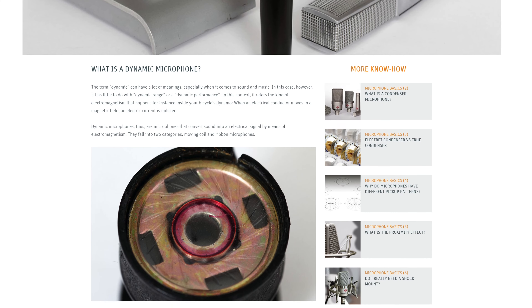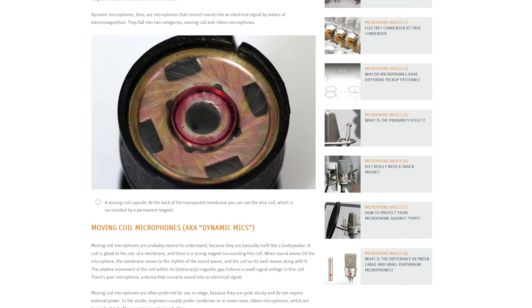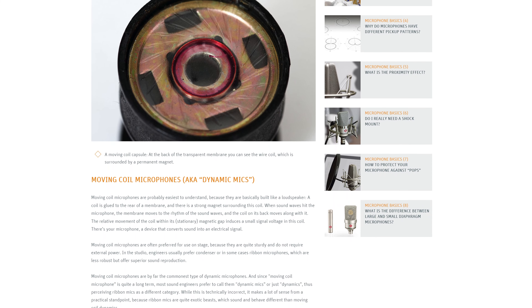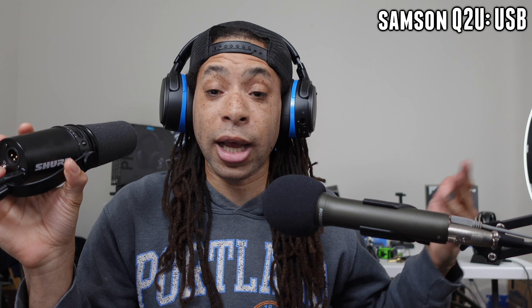So here are the facts. Fact number one: in both XLR and USB microphones, the physical components used to actually capture sound waves are identical. This applies to condenser and dynamic mics. Case in point, this microphone, the Samsung Q2U, and even this mic, the Shure MV7 — they can be connected via XLR or USB.